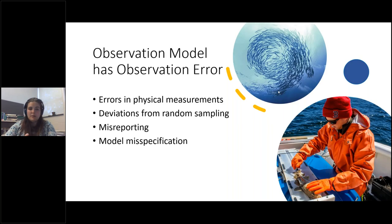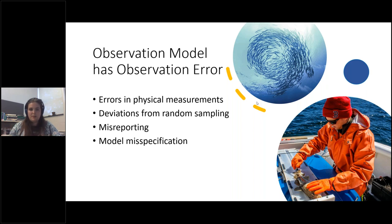The observation model also has variability and error from different sources. This can arise from errors in physical measurements, deviating from assumed random sampling — for example, unintentionally targeting schools of fish with similar ages — misreporting where one fish is misattributed to the wrong species, or the model itself assuming a distribution or structure that doesn't line up with reality. We try to account for observation error when we build specific likelihood functions.